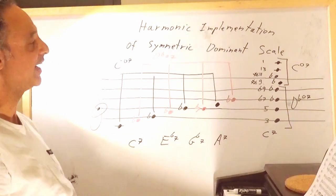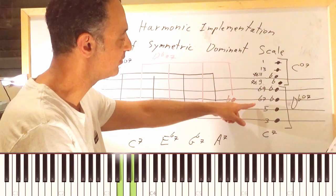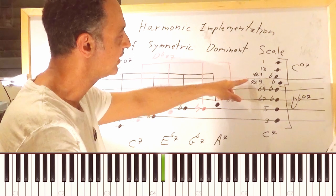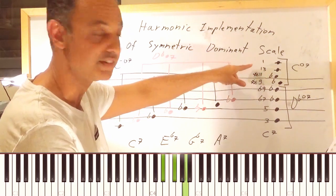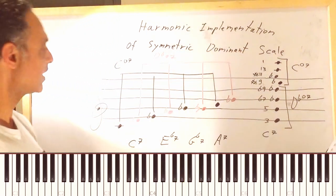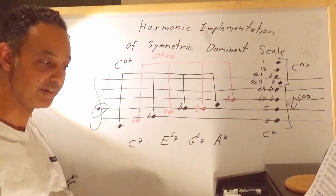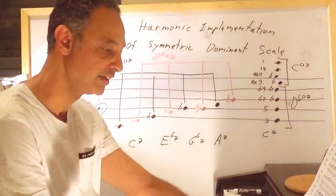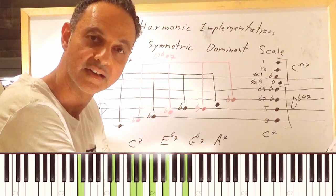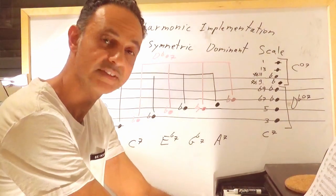Analyzing the voicing: it starts with the third of C7, then the fifth, flat seven, flat nine; then E flat is sharp nine, G flat is sharp eleven, A is the thirteenth of C7, and then the root on top. Since C7 is the five of F, it wants to resolve to F. Let's resolve this chord to F — and I can also resolve it to F minor.